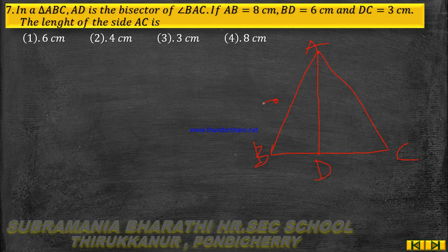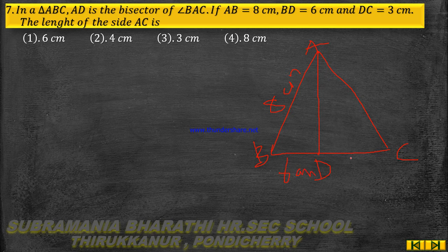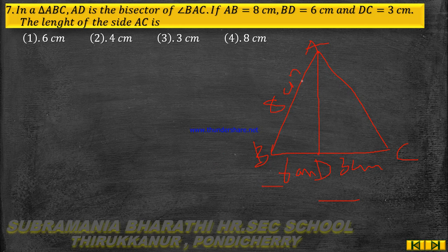Now, AB is equal to 8 cm, BD is equal to 6 cm, and DC is equal to 3 cm. We need to find the length of AC. We know that by the angle bisector theorem, BD by DC is equal to AB by AC.